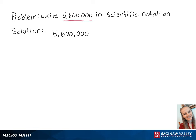When we write a large number in scientific notation, we want to move the decimal so that it is after the leftmost non-zero number, which is 5.